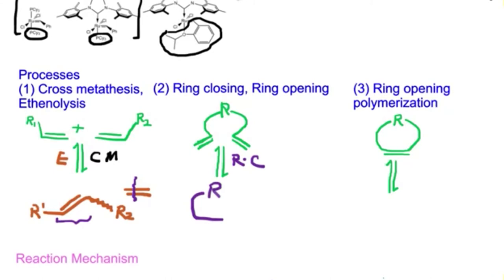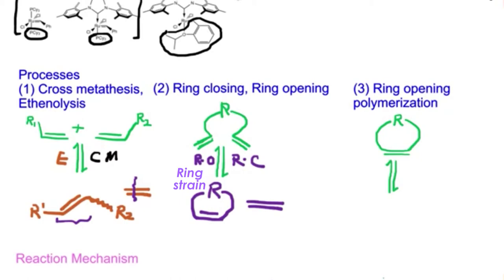In ring closing metathesis, the ring closes up as shown, and ethylene is produced as a gas — making more product, which is favorable through entropy. To favor the reverse reaction — ring opening — ring strain is the governing factor. If the ring is not a five- or six-membered ring, the reverse direction is actually favorable through ring strain and enthalpy. Additionally, increasing the pressure of the ethylene product forces the reaction to move in the reverse direction, so many factors influence this reaction.